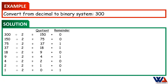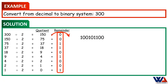Now, write out the remainders in the reverse order by rotating them clockwise to get the binary number. Since 2 bytes have 16 bits and here we have only 9 bits, we can write the remainder of the binary number as 0s on the left side.